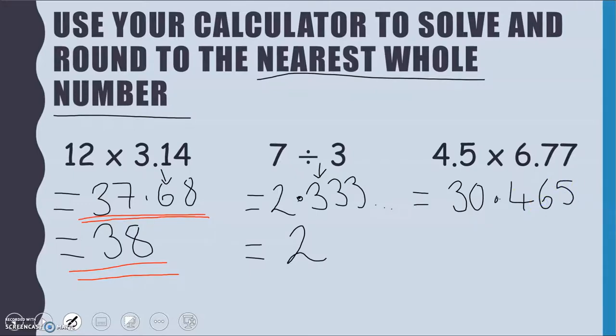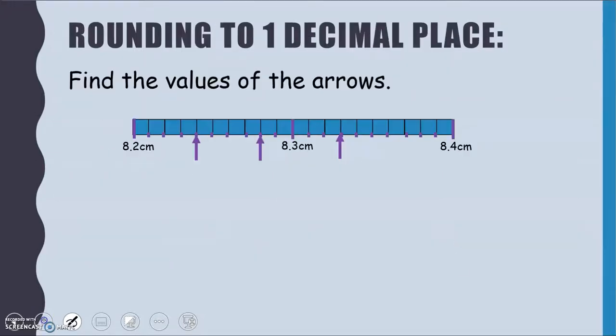So now we are going to look at rounding to one decimal place. And I have asked us to find the value of the arrows first. We can see here that I've got 20 boxes and I've got 8.2, 8.3 and 8.4 marked on. So I've got 10 boxes between 8.2 and 8.3. So I know that each of these boxes is going to be worth 0.01 this time. Our first arrow is 4 boxes up from 8.2, so that should be 8.24. Our next one is another 4 boxes up from that, so it should be 8.28. And then our last one is 3 boxes up from 8.3, so it should be 8.33.